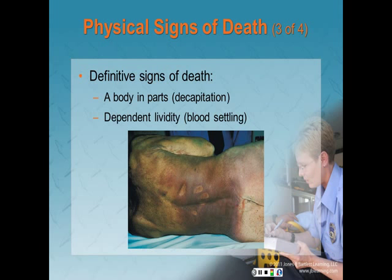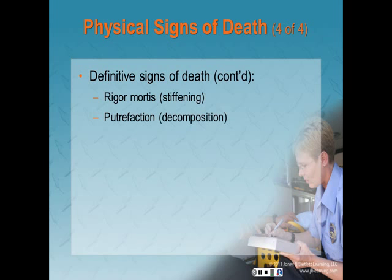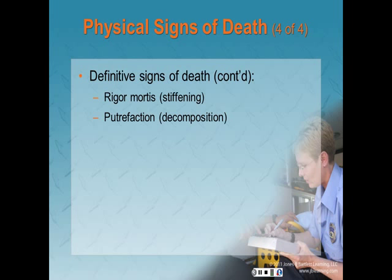Definitive signs of death include: the body being in parts or decapitated; dependent lividity — blood settling to the lowest point of the body causing skin discoloration; and rigor mortis — stiffening of the body caused by chemical changes in muscle tissue, occurring between 2 and 12 hours after death. If you see rigor mortis, the patient has been dead far too long for successful resuscitation. The last definitive sign is putrefaction or decomposition, which can occur between 40 and 96 hours after death depending on temperature.